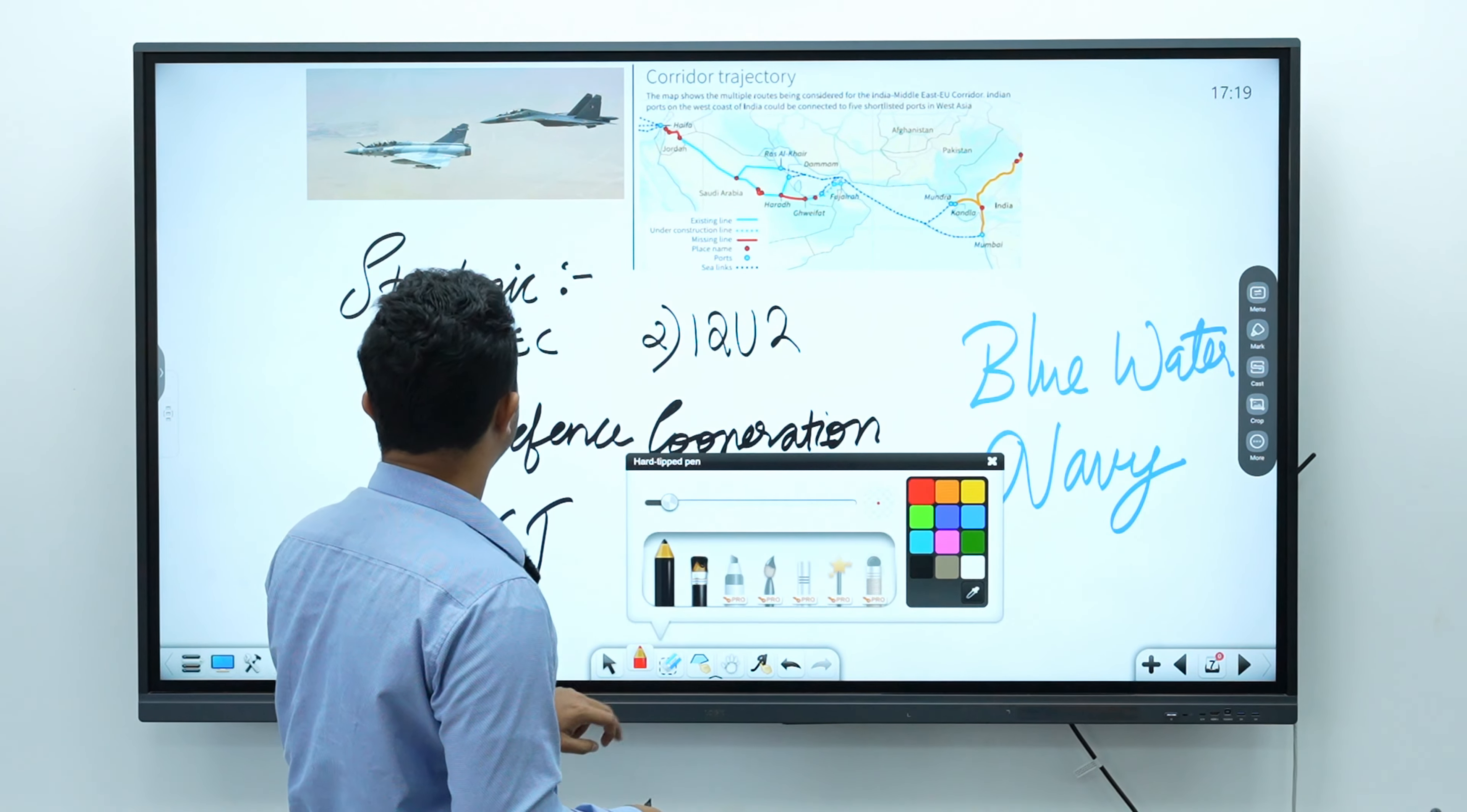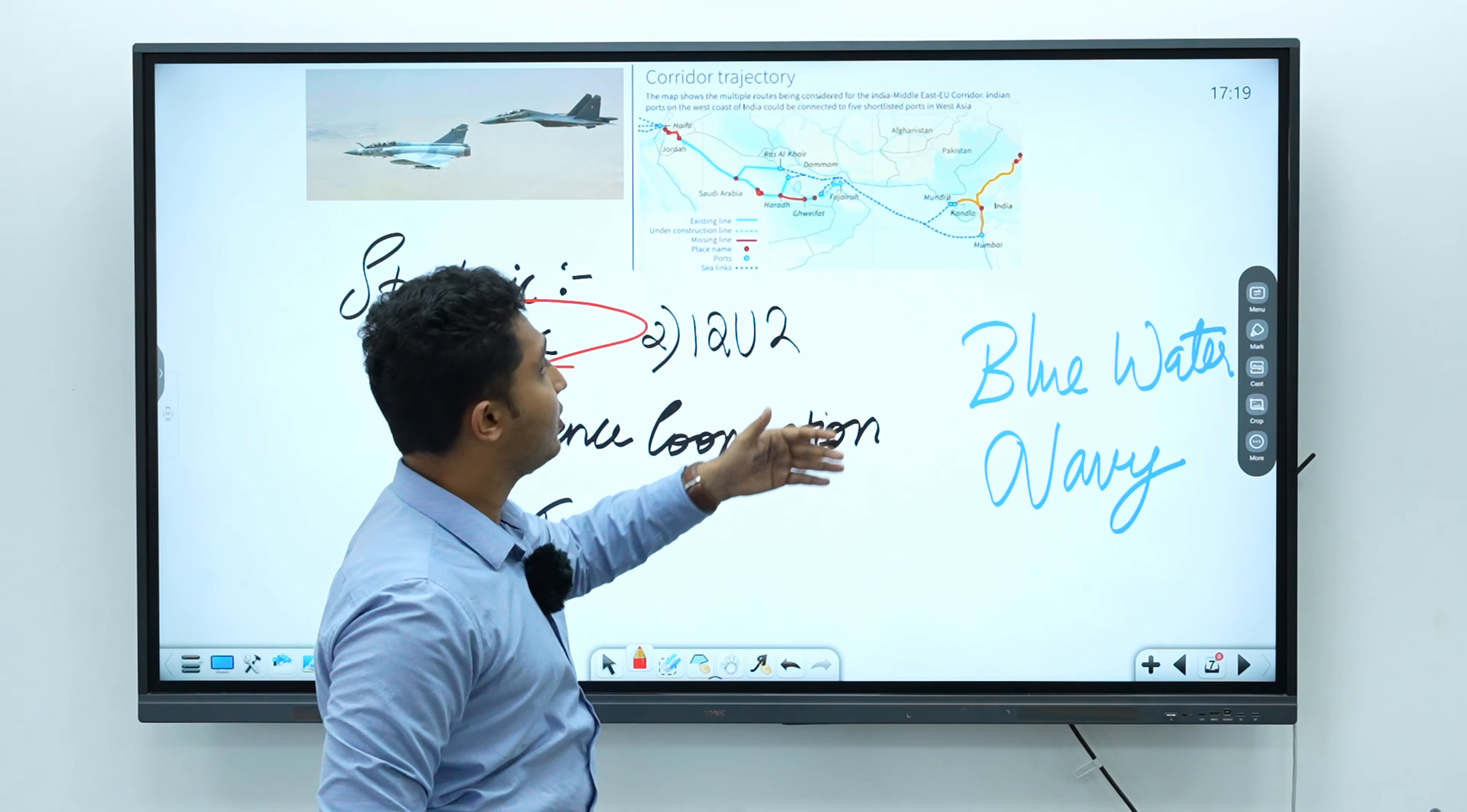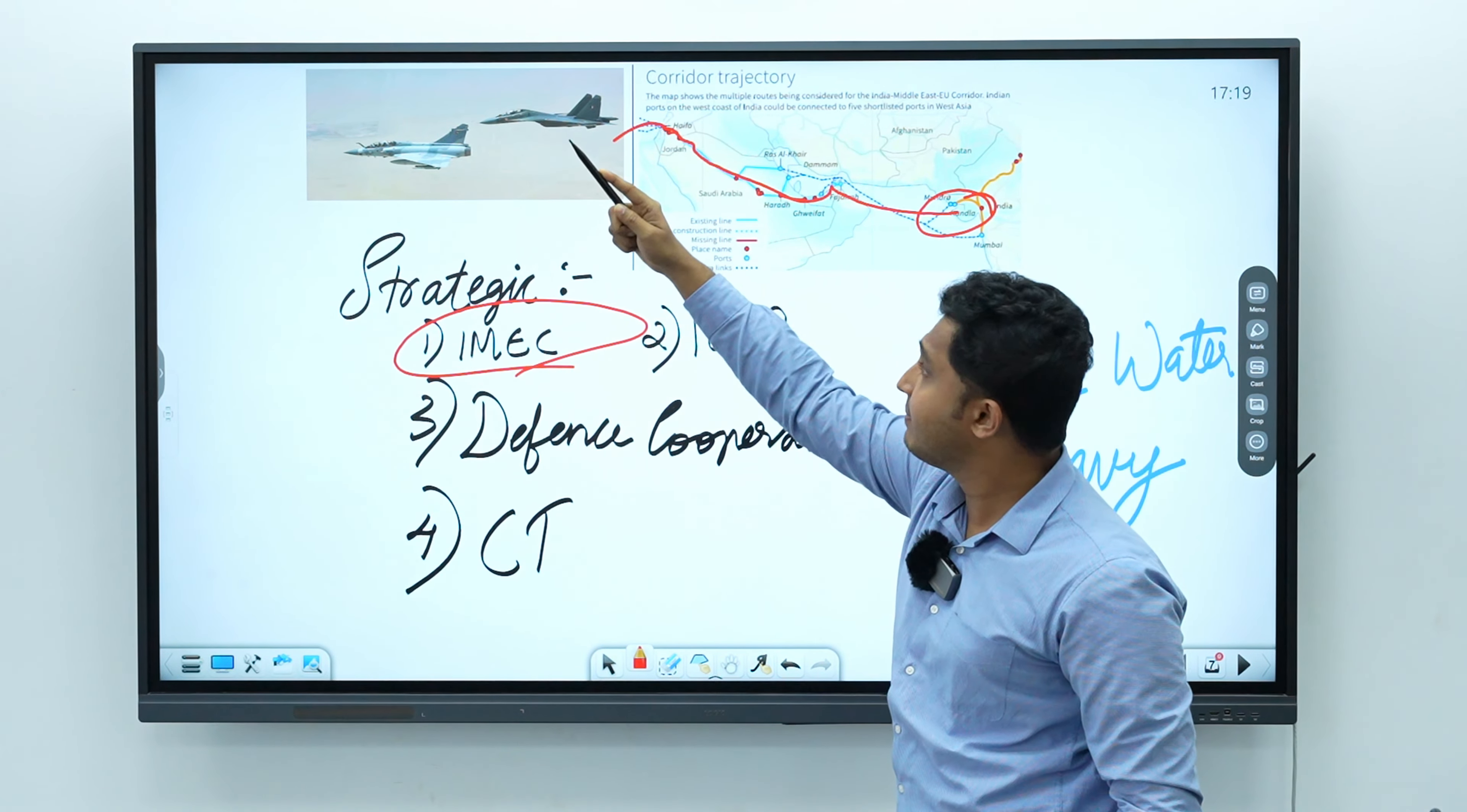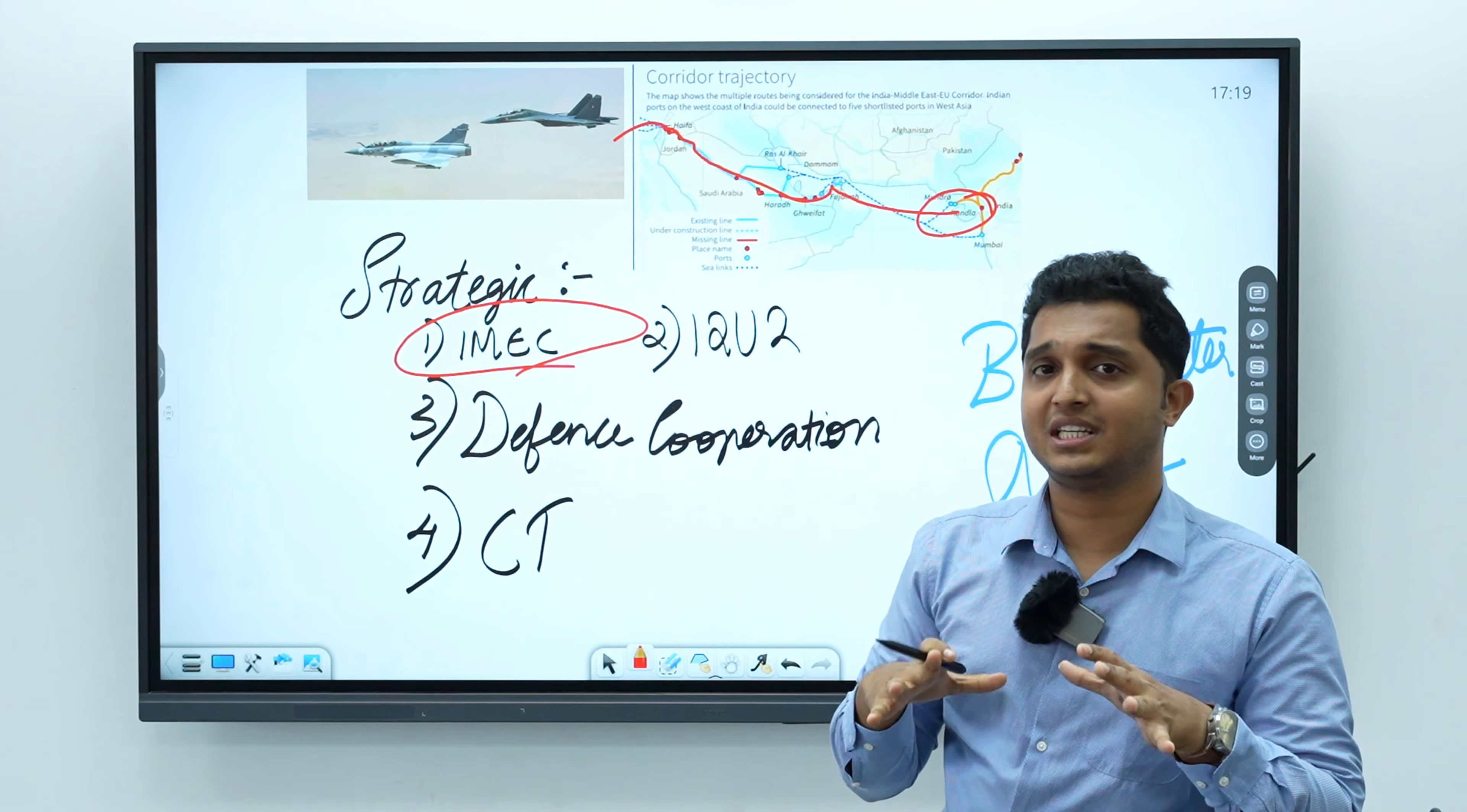The first topic is IMEC, the India Middle East EU corridor. This will be passing from India and connecting us to UAE, passing through Saudi Arabia, Jordan, Israel, and from there towards EU. This is in news now because this is a multi-modal kind of project connecting India with the Middle East as well as Western Europe.